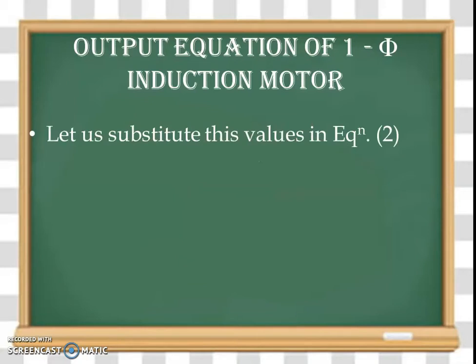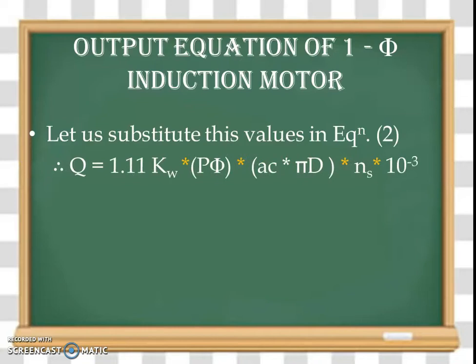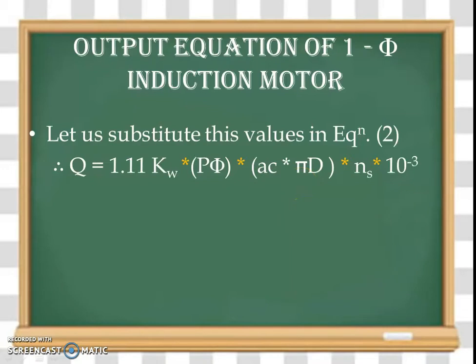Now let us substitute this value in equation number 2. So Q = 1.11 × Kw × Pφ, and we have substituted the value for 2·Tm·I which equals AC × πd. Multiplied by synchronous speed Ns in RPS, multiplied by 10 raised to minus 3. Let us call this equation number 3.